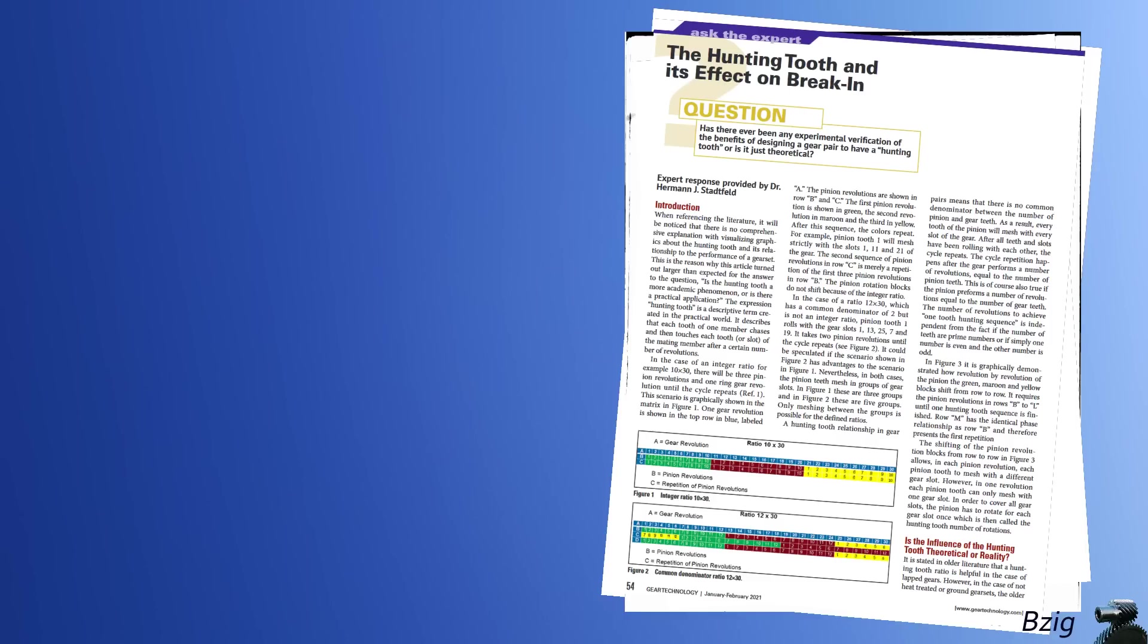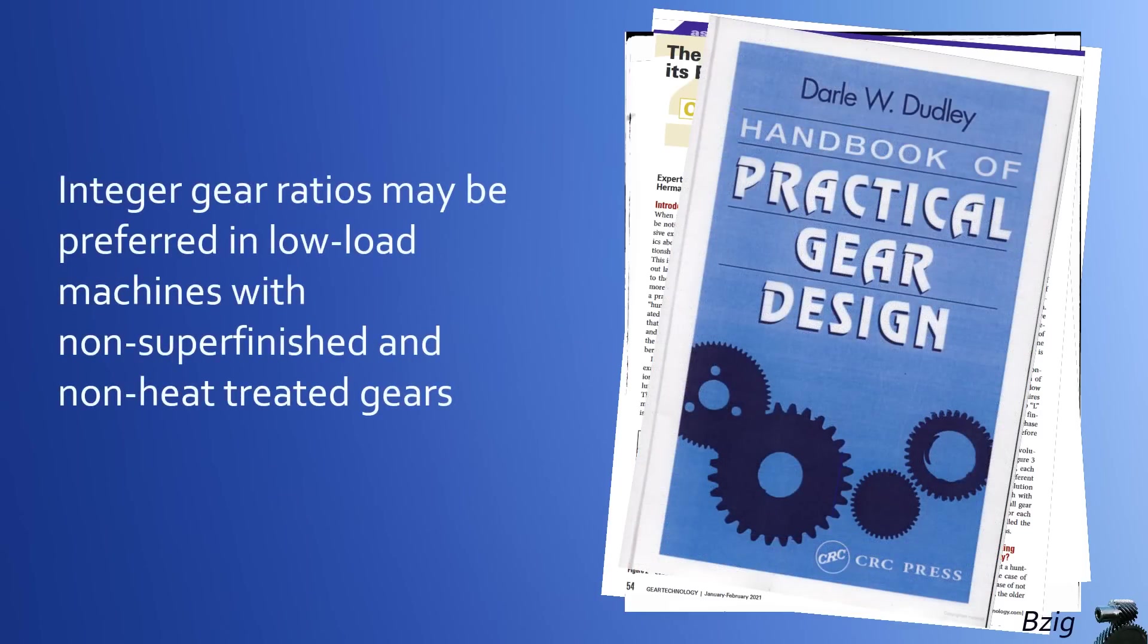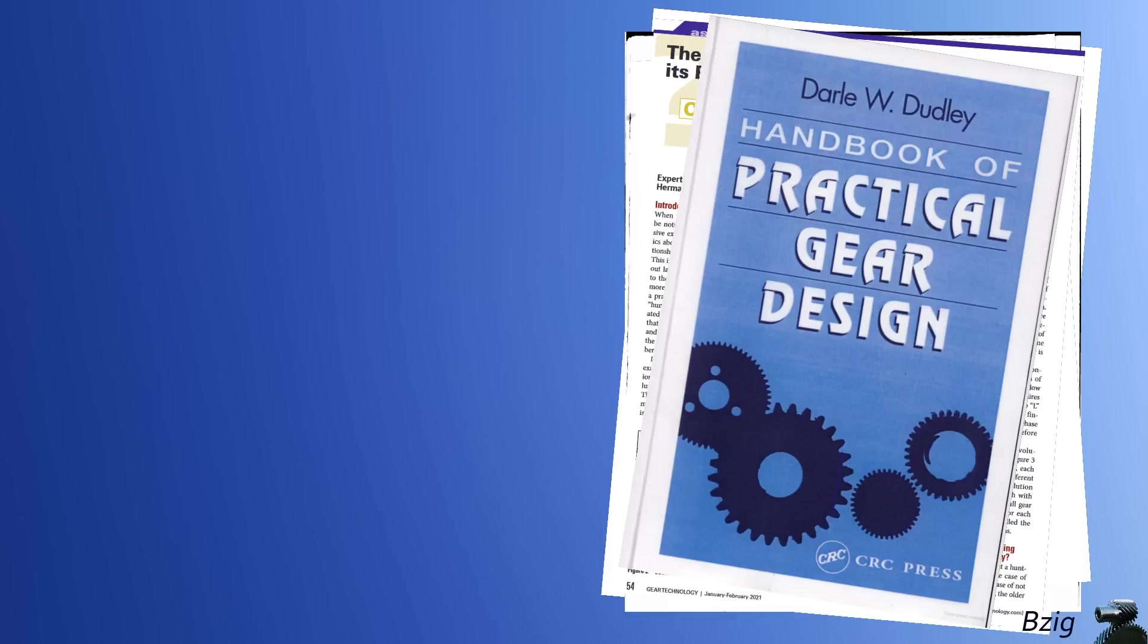But there are a few references that have more nuanced answers to the question as to whether hunting teeth are always preferred over non-hunting teeth. If you look in your January 2021 copy of Gear Technology, you'll see that Dr. Stottfeld devoted an entire article to the question: Is the influence of the hunting tooth theoretical or reality? This article, along with the Handbook of Practical Gear Design, talk about a preference for integer gear ratios in low-load machines with non-superfinished and non-heat-treated gears. And these conditions don't apply to helicopter transmissions. So it seems the predominance of the literature that I was able to find online supports the selection of hunting tooth designs for helicopter transmissions.